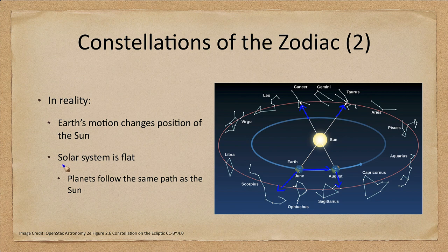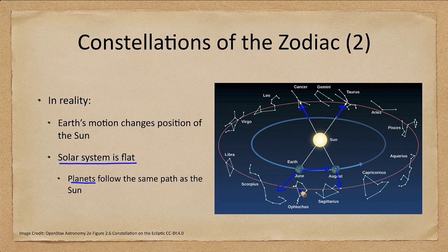Why do all of these objects pass through these same constellations? That is a consequence of the solar system being flat. If the solar system were more spherical, we would not see that. Because the solar system is flat, the planets follow the same path as the Sun and pass through this same grouping of constellations.